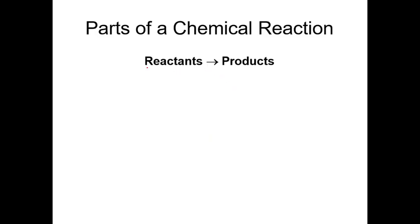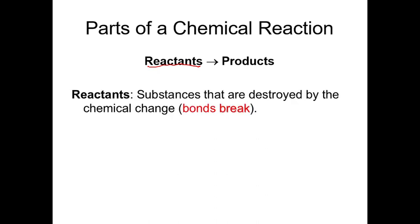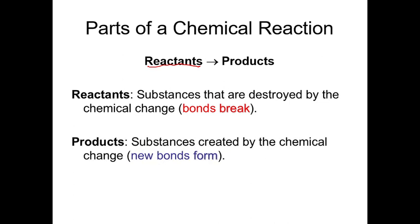In a chemical reaction, the chemical substances you start with that are broken down and change form are called the reactants — substances that are destroyed by chemical change. We break the chemical bonds between them and rearrange the elements. Then the products are the substances that are created by chemical change. After we break those chemical bonds, new ones are formed to create new products.